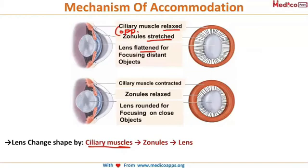Conversely, when I am having blurred vision, my ciliary muscle contracts and my zonules relax. When the zonules relax, there is no stretch on the lens, so it also relaxes and becomes more rounded, helping in focusing near objects. That is the principle of near vision and accommodation.